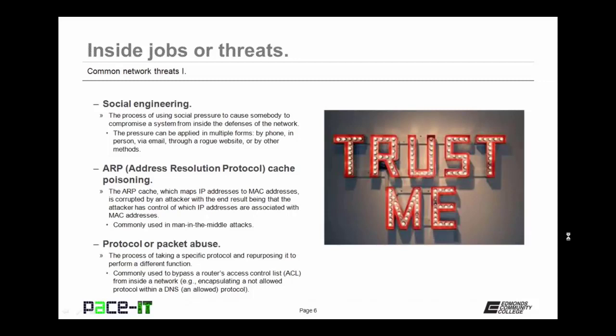Then there are protocol or packet abuse threats. This is the process of taking a specific protocol and repurposing it to perform a different function. Protocol abuse is commonly used to bypass a router's access control list from inside of a network. An example of this is encapsulating a not allowed protocol within a DNS packet, which is almost always an allowed protocol, in order to get that unallowed protocol out of the network.